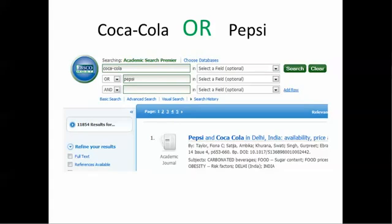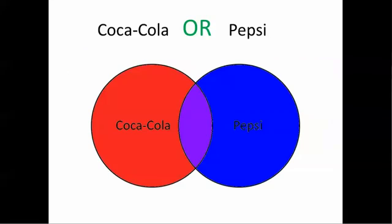Conversely, if I connect both keywords with the OR operator, I return 11,854 results. This is much more than my previous searches. By connecting with OR, I expanded my hits to any article that included either keyword.